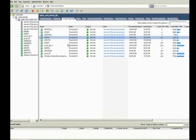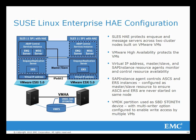Here we see the ESX cluster with four nodes. These nodes contain the virtual machines for the SAP environment. The SAP services are spread across the cluster to provide high availability. Here we take an in-depth look at the layout of SAP. SUSI HAE protects the NQ and message servers built on two virtual machines. The VMs are protected using VMware HA.